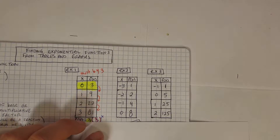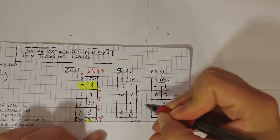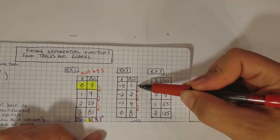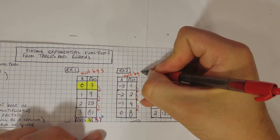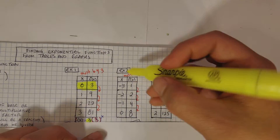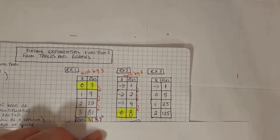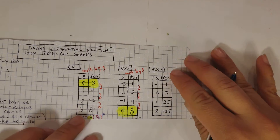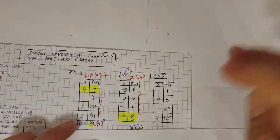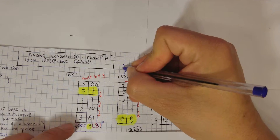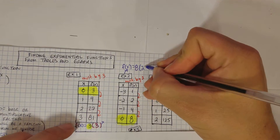Let's do another example. What is the function for example number two? Well, let's look at the pattern. We have one that turns into two, two turns into four, four turns into eight. So in this case, we're actually multiplying by two — one times two is two, two times two is four, four times two is eight. Now we just need to find where x is equal to zero. That's way at the bottom in this table, and the value of the y-intercept, or a, would be equal to eight. So putting it all together, it's going to be f of x equals eight times two to the power of x.